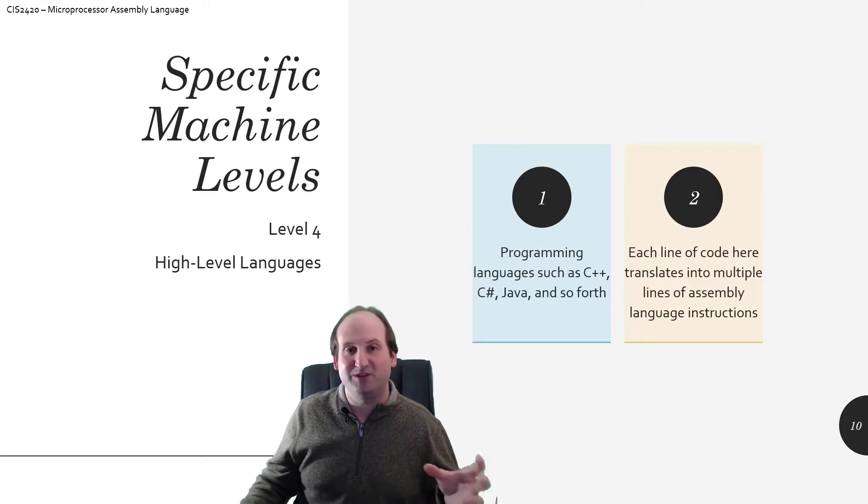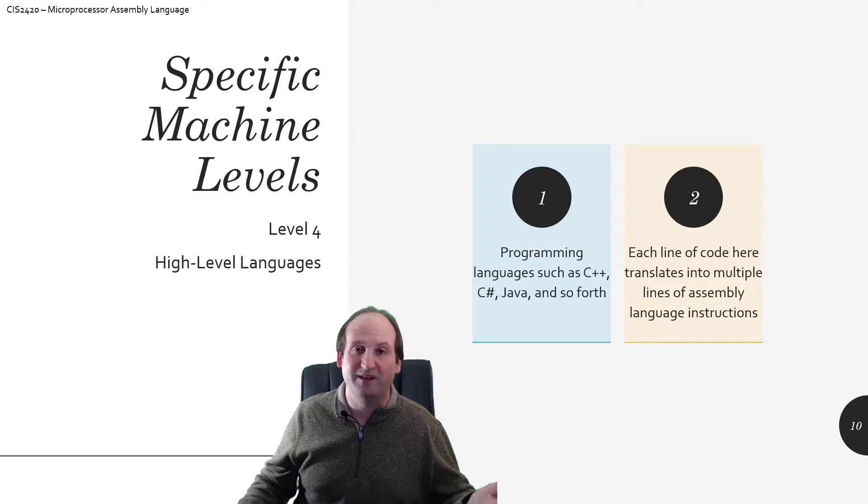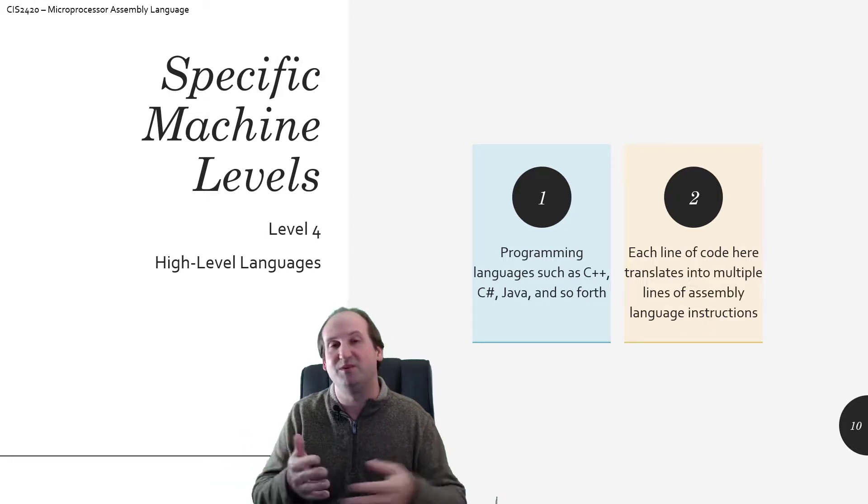And again, as we showed in the previous slides, one line of these high level language lines of code can directly translate down into multiple assembly language lines of code. Anywhere from one, simple operations like ++I or something like that is one line of code in assembly language. But anything else produces a ton more.